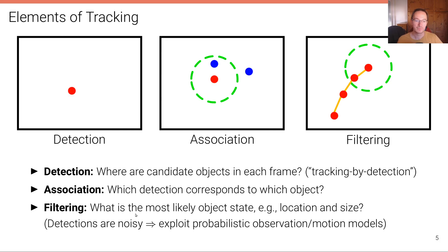And finally, we have the filtering problem where the question is, what is the most likely object state? For example, the location or the size of the object, depending on what defines the state or what the user is interested in. Typically we are interested in location and maybe the size of the bounding box. Remember detections are noisy. And so what we're doing here is we're trying to minimize that noise by exploiting the fact that we have multiple observations from the same object. In contrast to the previous lecture where we're considering a single frame, object detection in a single frame, we have just a single observation per object.